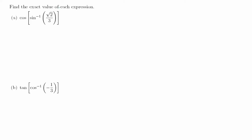Find the exact value of each expression. In part a we have cosine of sine inverse of root 2 over 3. So inside we have sine inverse of this number, which will be an angle, and then we find cosine of that angle. So let's say this angle is theta.